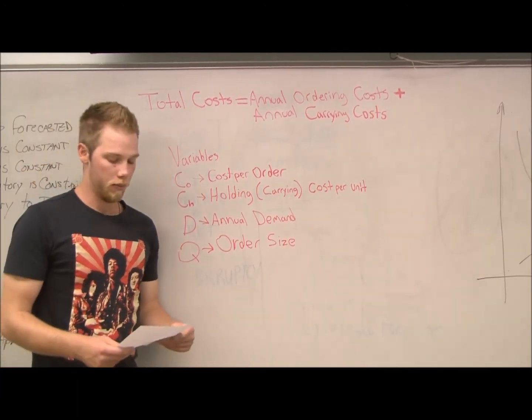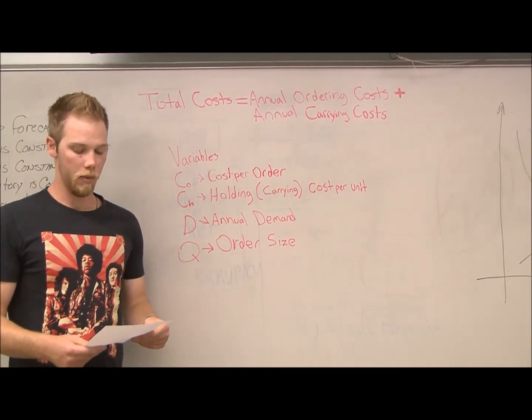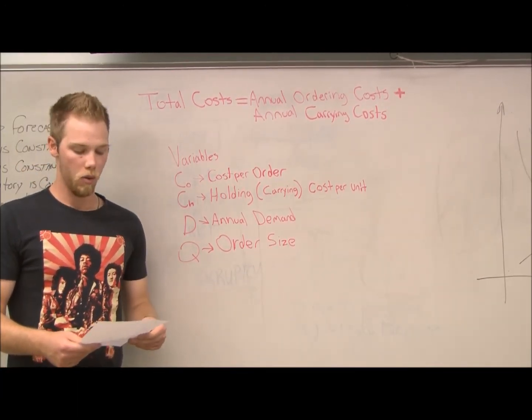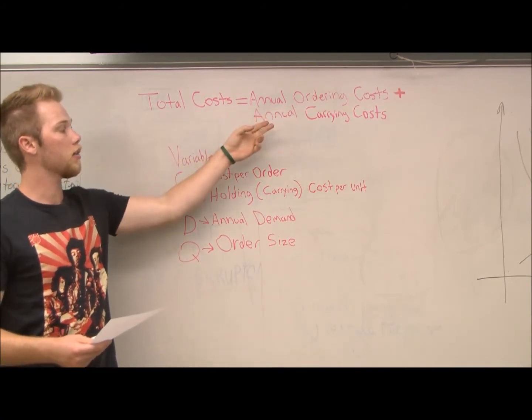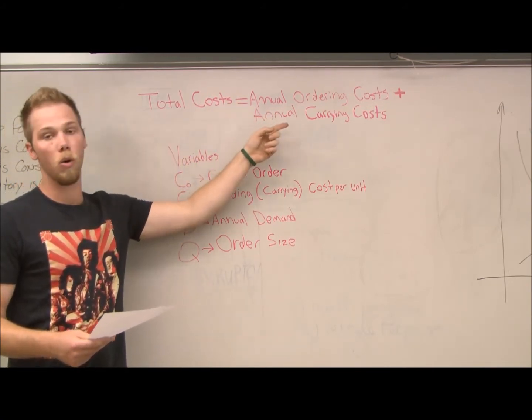With the EOQ model, our objective is to minimize total annual costs, which are the sum of annual ordering costs and annual carrying or holding costs.